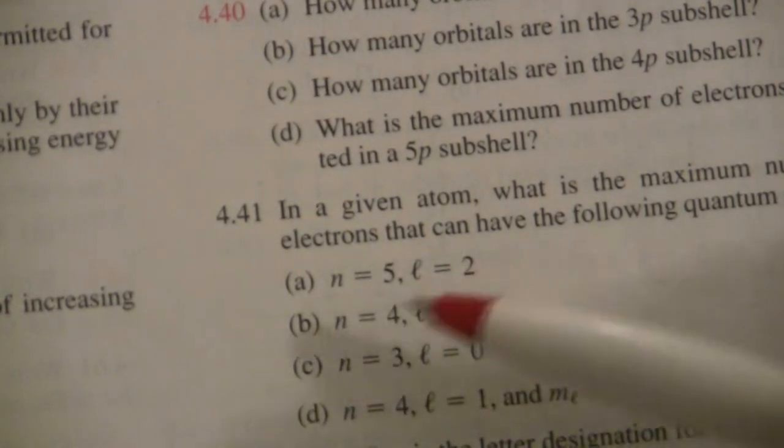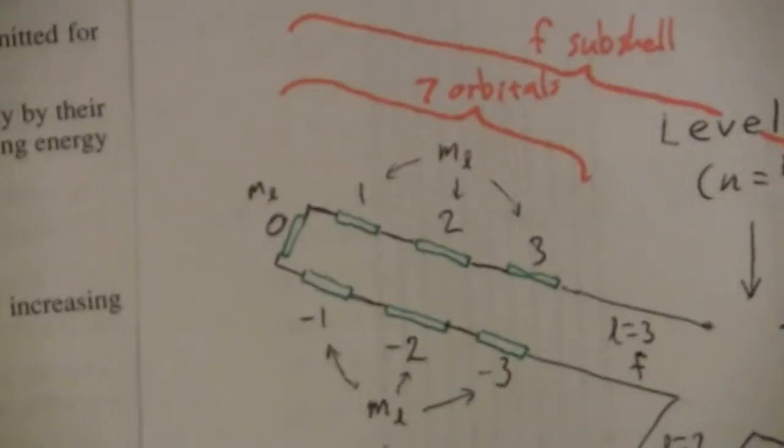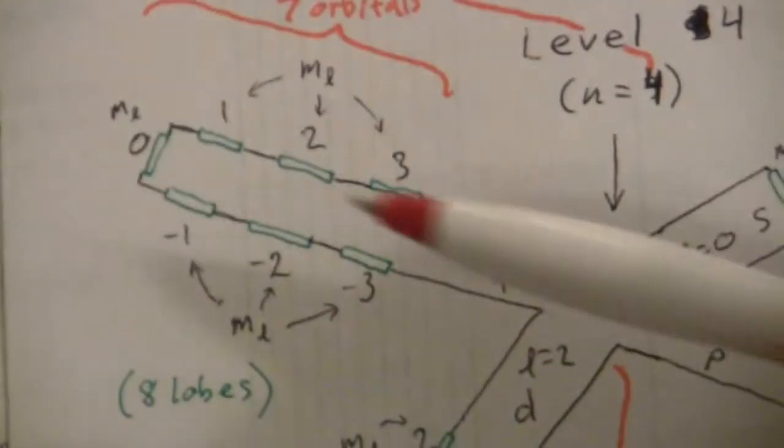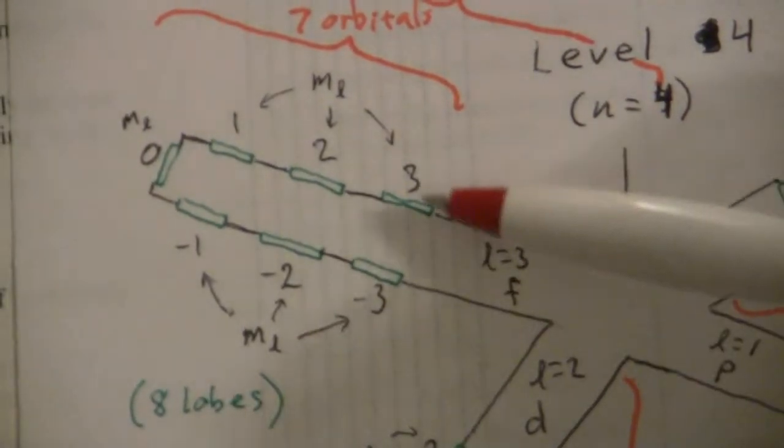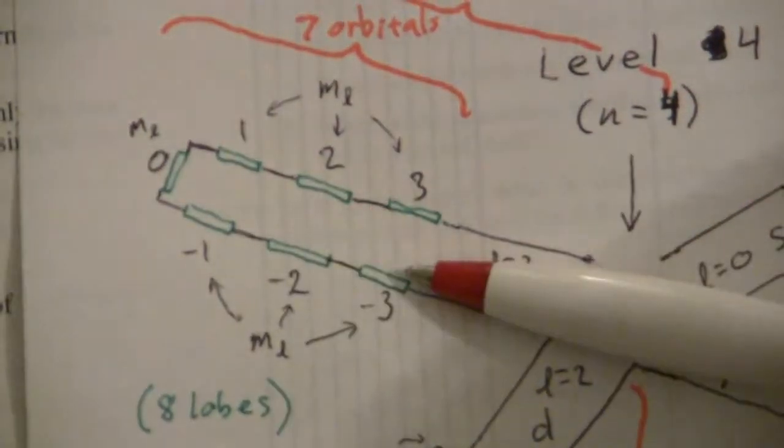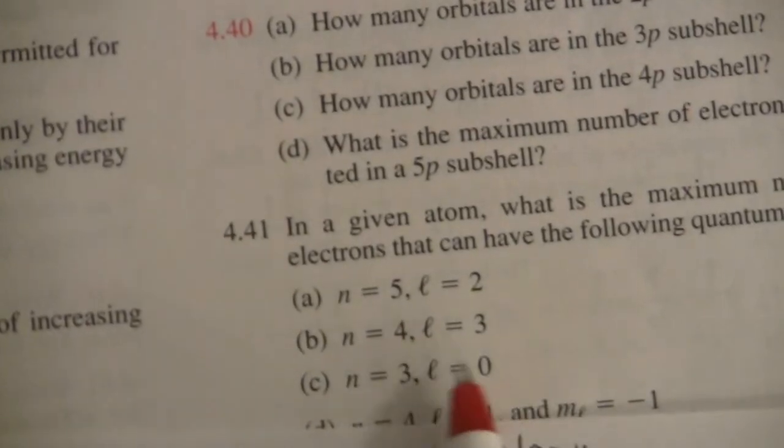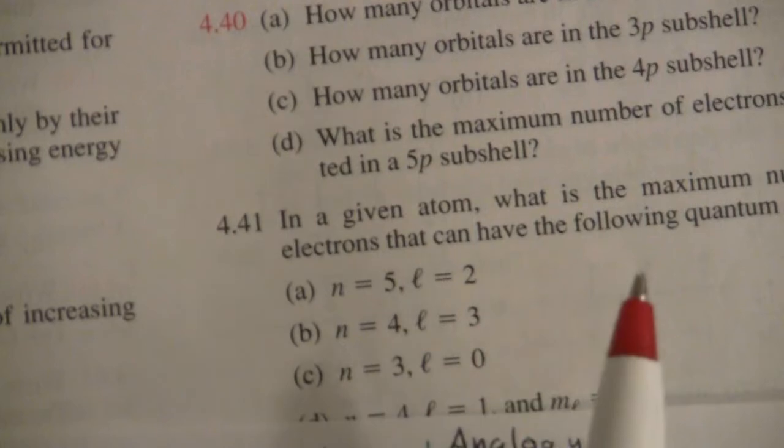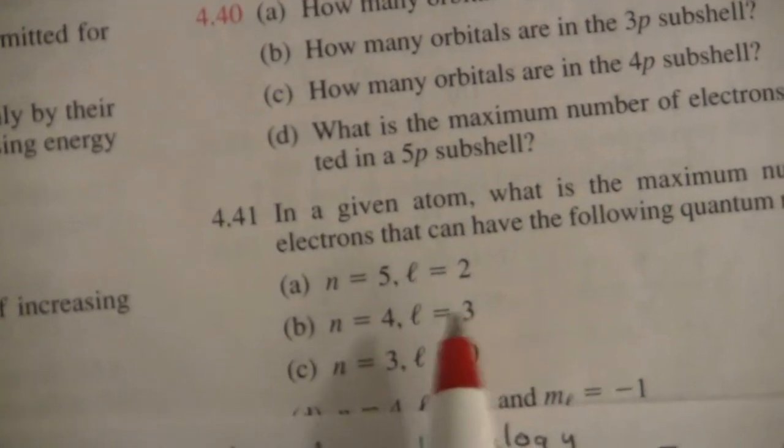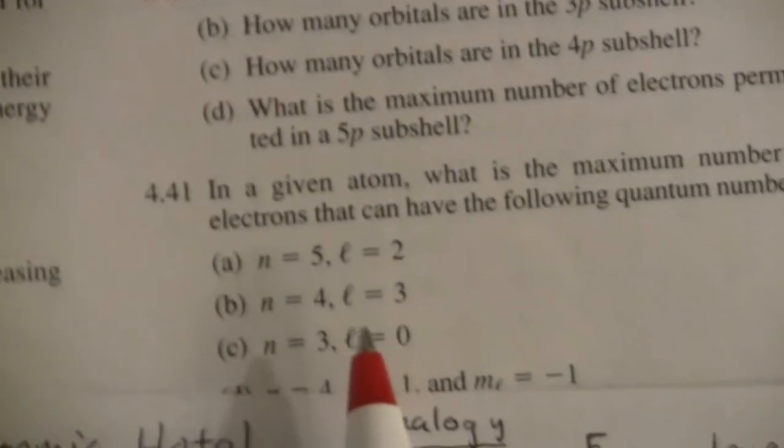Again, likewise, n equals 4, l equals 3. I have that one drawn out here. That's this wing, the 4f. There are seven orbitals and therefore 14 electrons that can have those two numbers.